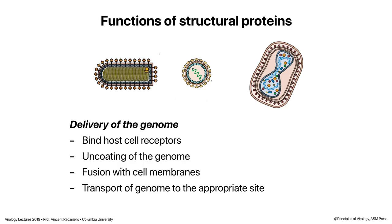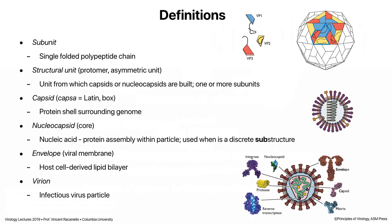These particles have to be constructed so that at some signal they deliver the genome into the cell. They bind to host cell receptors, the genome is released — we call that uncoating. In some cases when there's a membrane on the particle, the membrane has to fuse with the membrane of the cell. Sometimes the structural proteins make sure the genome goes to the right place — depending on the virus, the destination is the cytoplasm or the nucleus.